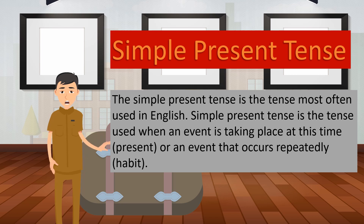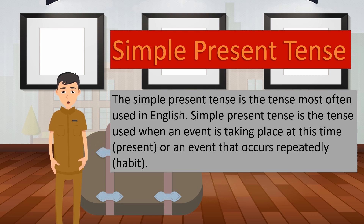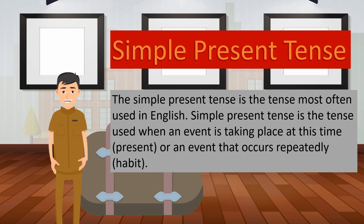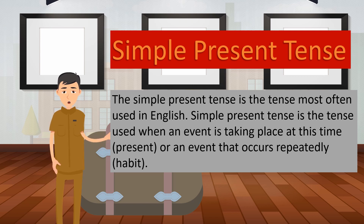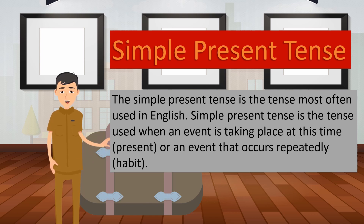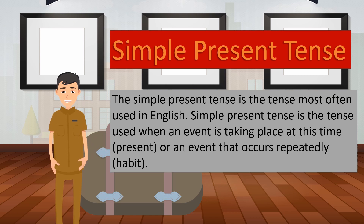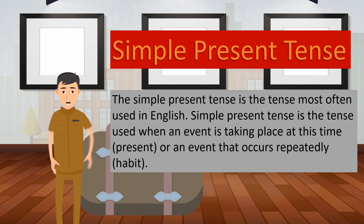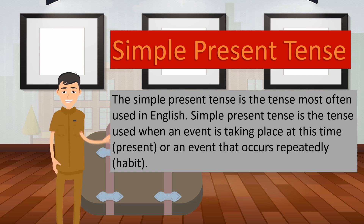Next, simple present tense. The simple present tense is the tense most often used in English. It is used when an event is taking place at this time — in the present — or for an event that occurs repeatedly, such as a habit.